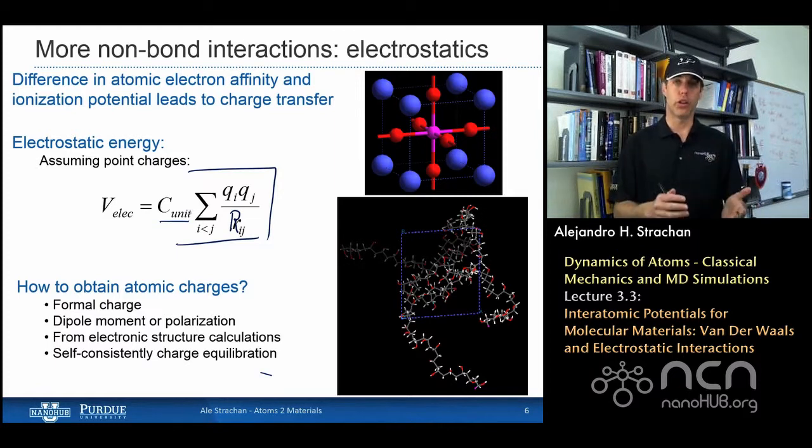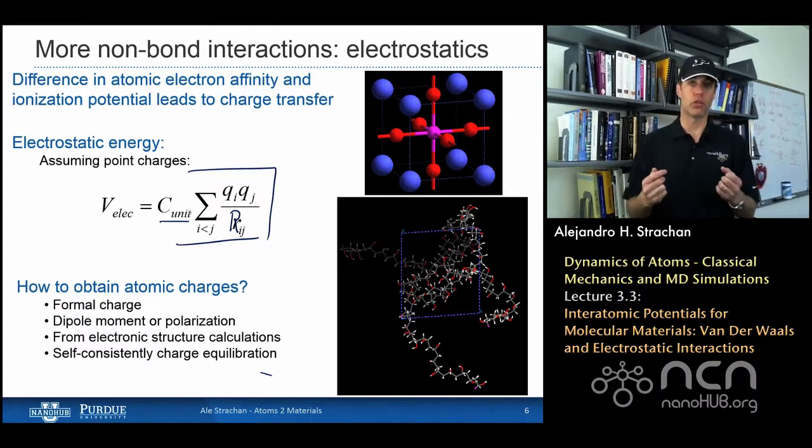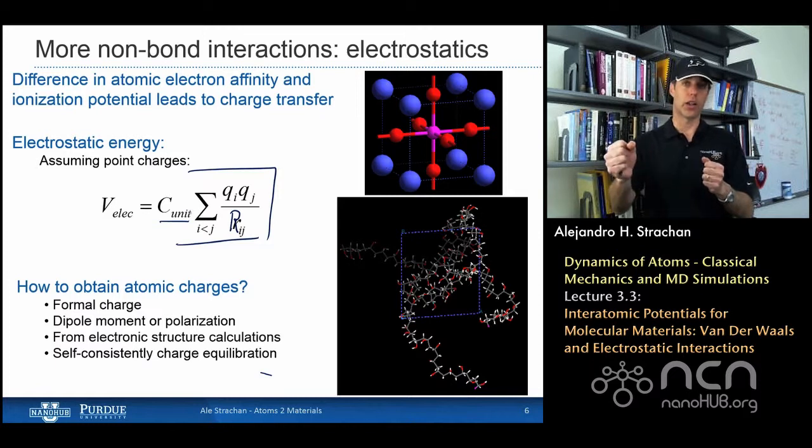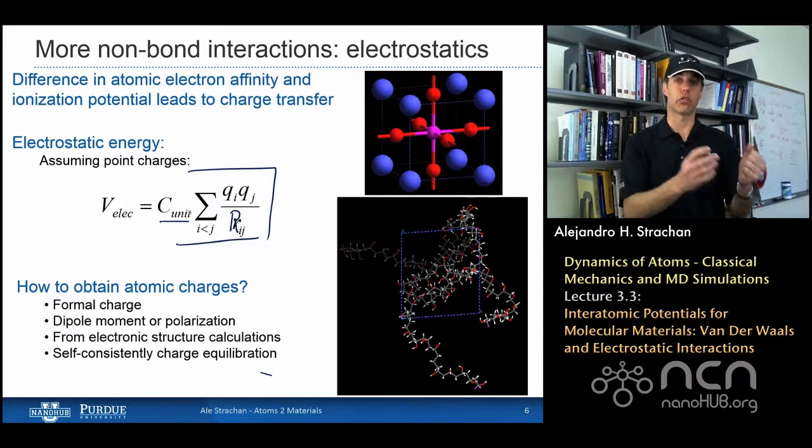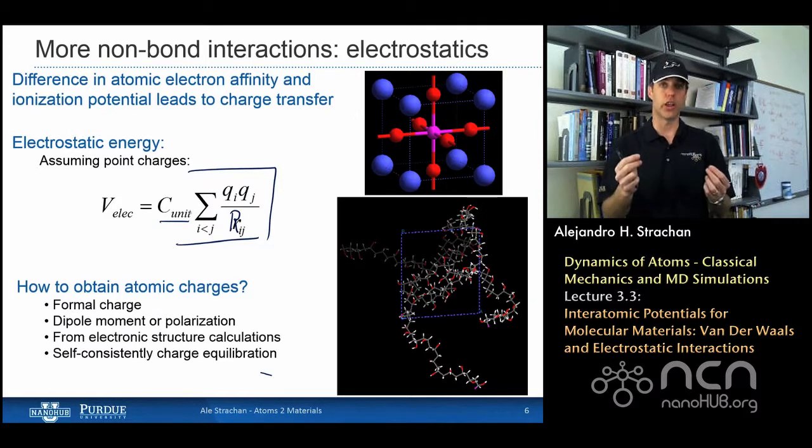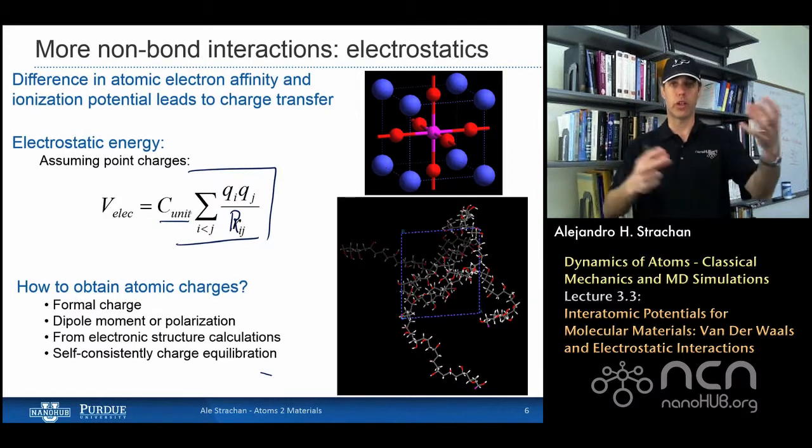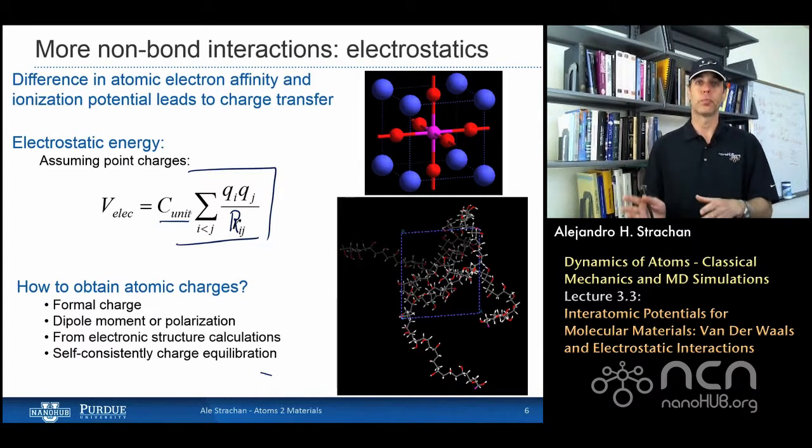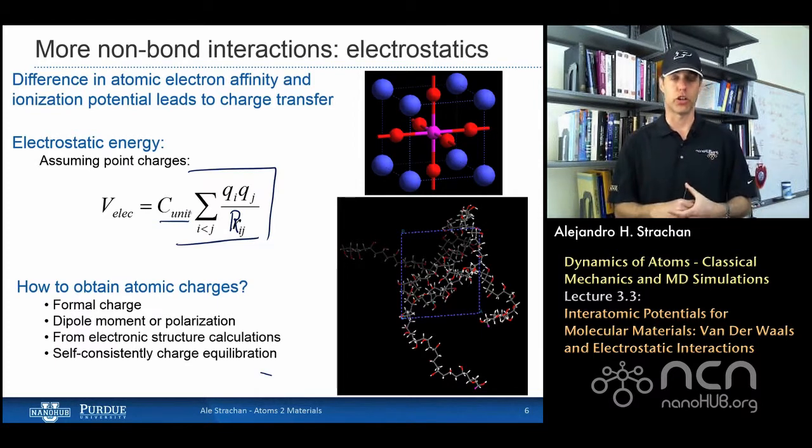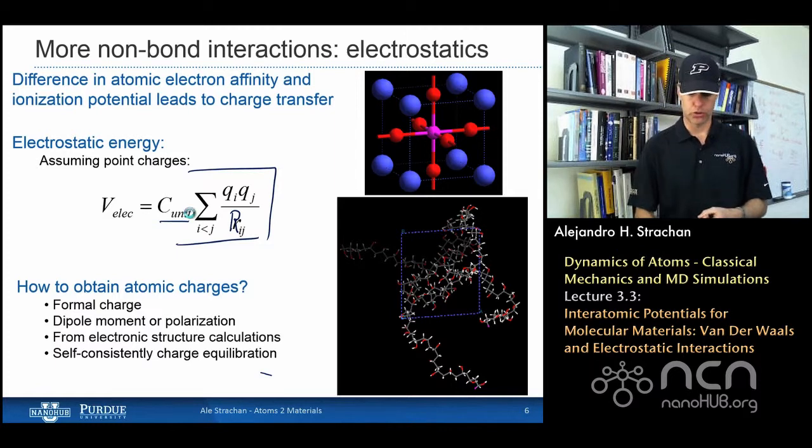There are different ways of obtaining these charges. One could use formal charges, although that's not very accurate. One can compute the actual partial charge from electronic structure calculations, and there are other methods called charge equilibration methods that compute charges in terms of atomic positions and the electronegativity and hardness of the atoms, so in terms of atomic properties and the structural configuration. We're going to discuss charge equilibration in week 5 of the course.